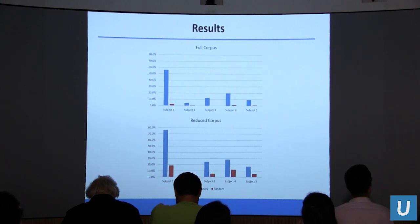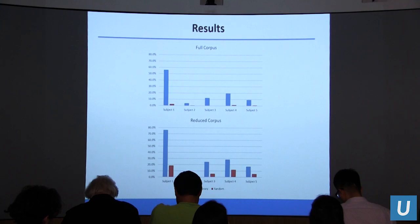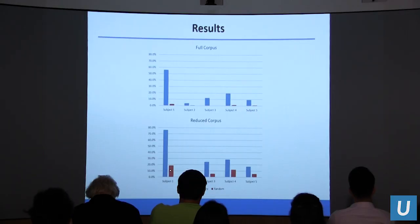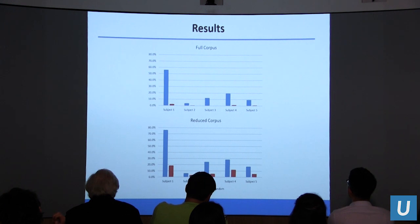Covering the results so far, we have five subjects. Performance varied between about 5% up to almost 60%, varying based on electrode localization and other components. That's based on the full corpus of natural language. We then reduced the corpus to specifically the words they were trying to say, which makes it easier to get things by random chance — shown as the red bars — but also greatly increased our model performance. We got up to 80% accuracy on word selection for one of our subjects.